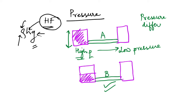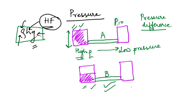Pressure difference determines flow rate — more the pressure difference, more is the flow rate. It is not the absolute pressure at a place which determines flow rate; it is the pressure difference from one region to another. Absolute pressure is determined by ρhg, so the height of the fluid column determines pressure in a cylinder.